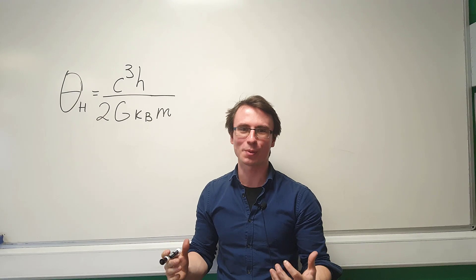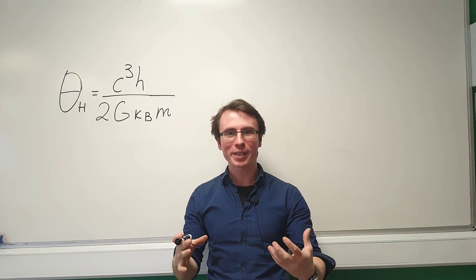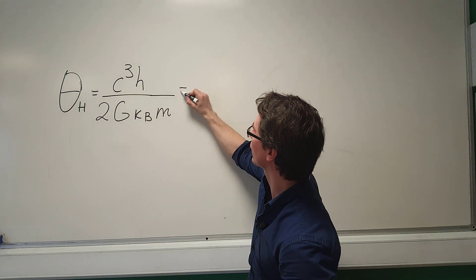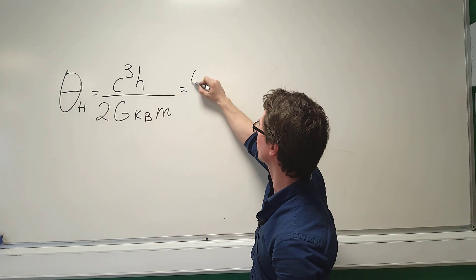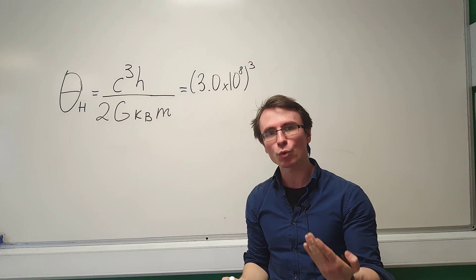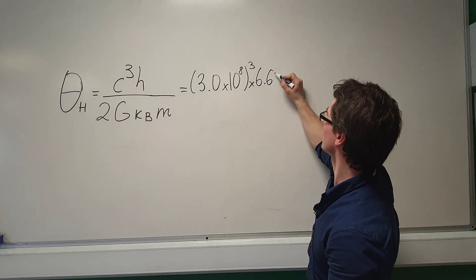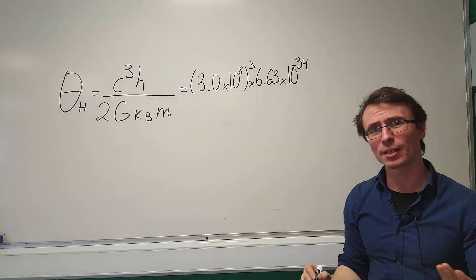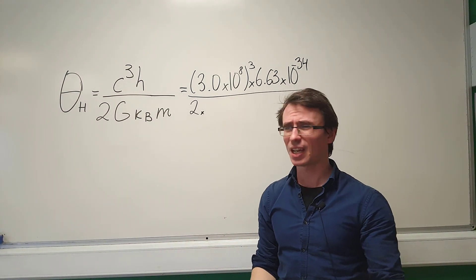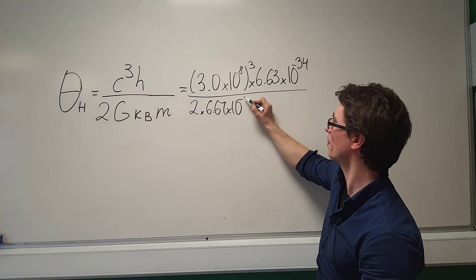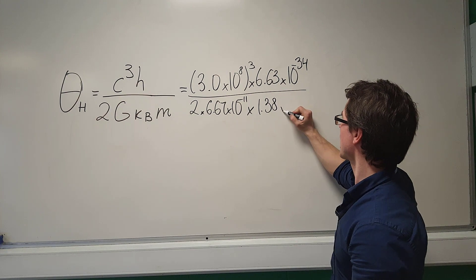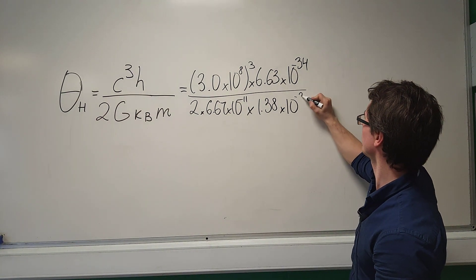Let's have some fun with this equation and plug in some values to calculate the Hawking temperature for a black hole of about 5 solar masses. The speed of light is 3×10⁸, cubed. Planck's constant h = 6.63×10⁻³⁴. Then a factor of 2, the gravitational constant G = 6.67×10⁻¹¹, and Boltzmann's constant k_B = 1.38×10⁻²³.